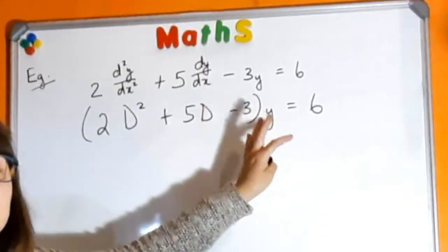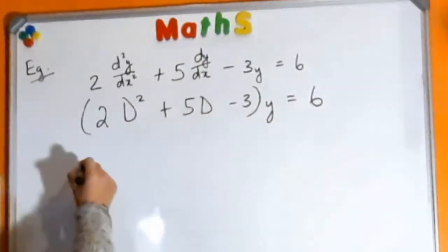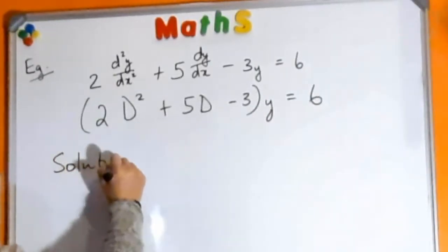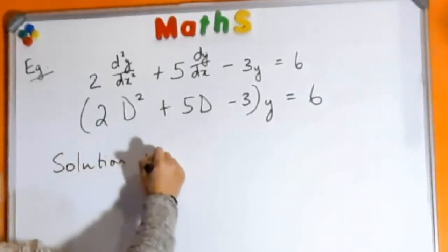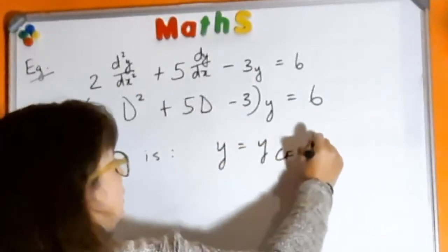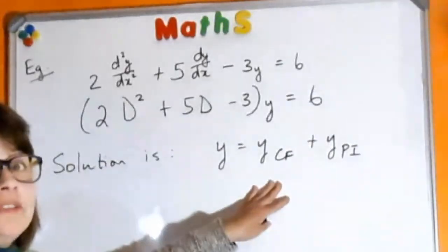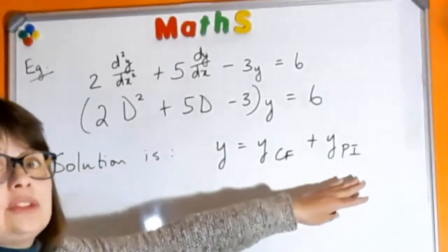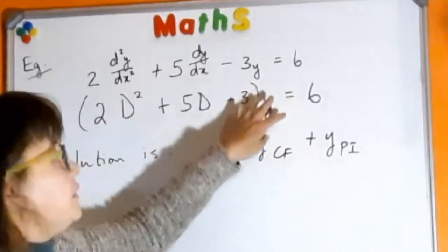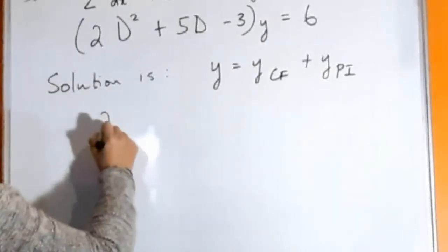Because you are working with a non-homogeneous or forced system differential equation, the solution is made up of two parts: your complementary function plus your particular integral. In place of y you can write your differential equation like this.